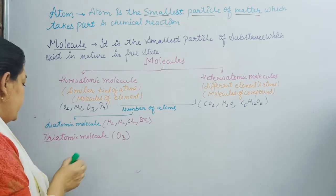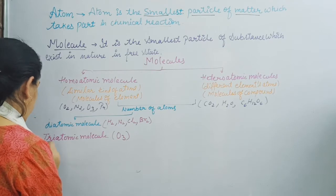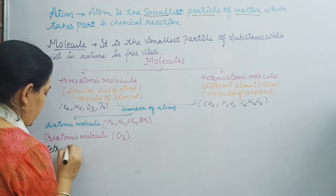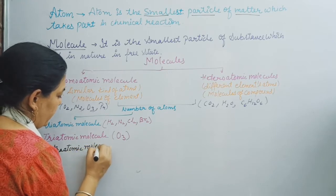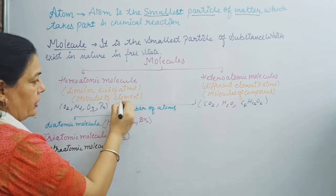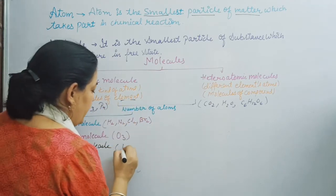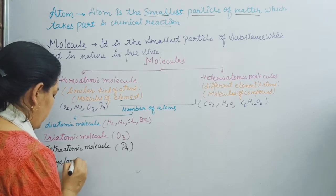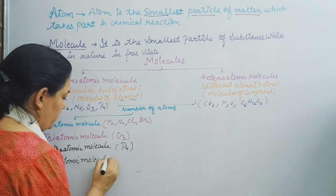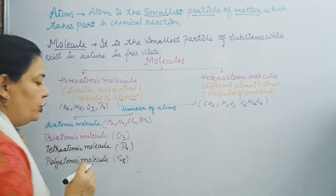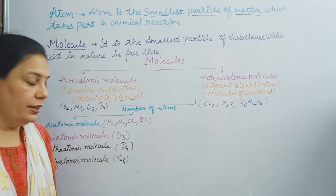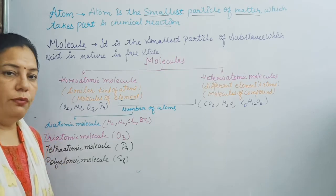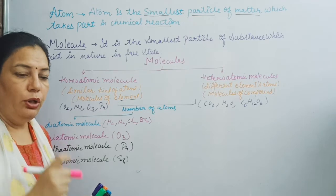Next is a tetraatomic molecule, or tetraatomic molecule of element. 'Tetra' means four atoms are present. The example is P4 — phosphorus. One more category is polyatomic: the polyatomic molecule of element is S8, in which one sulfur molecule contains eight atoms. The structure of this molecule is octahedral — eight sulfur atoms combine to form one molecule of sulfur.